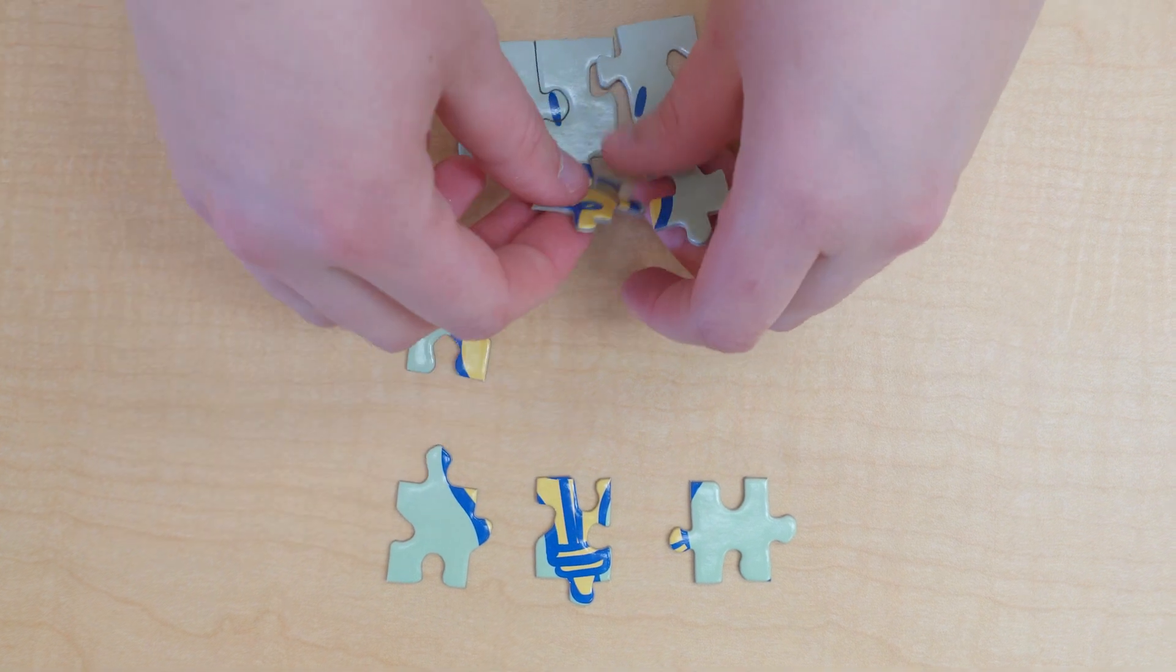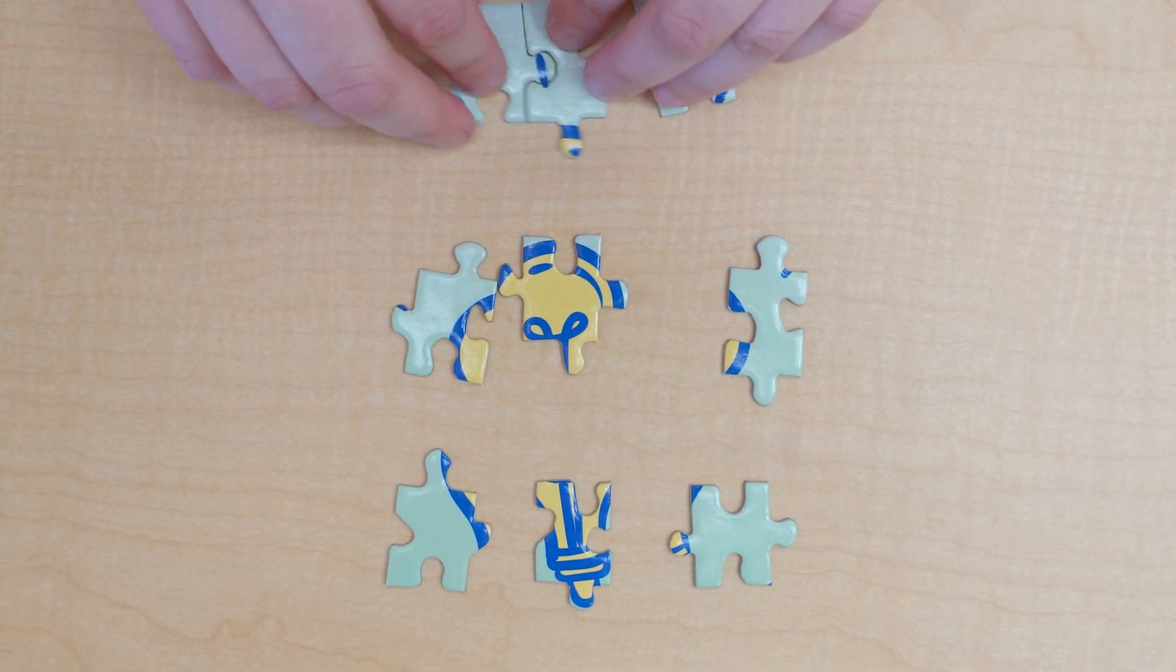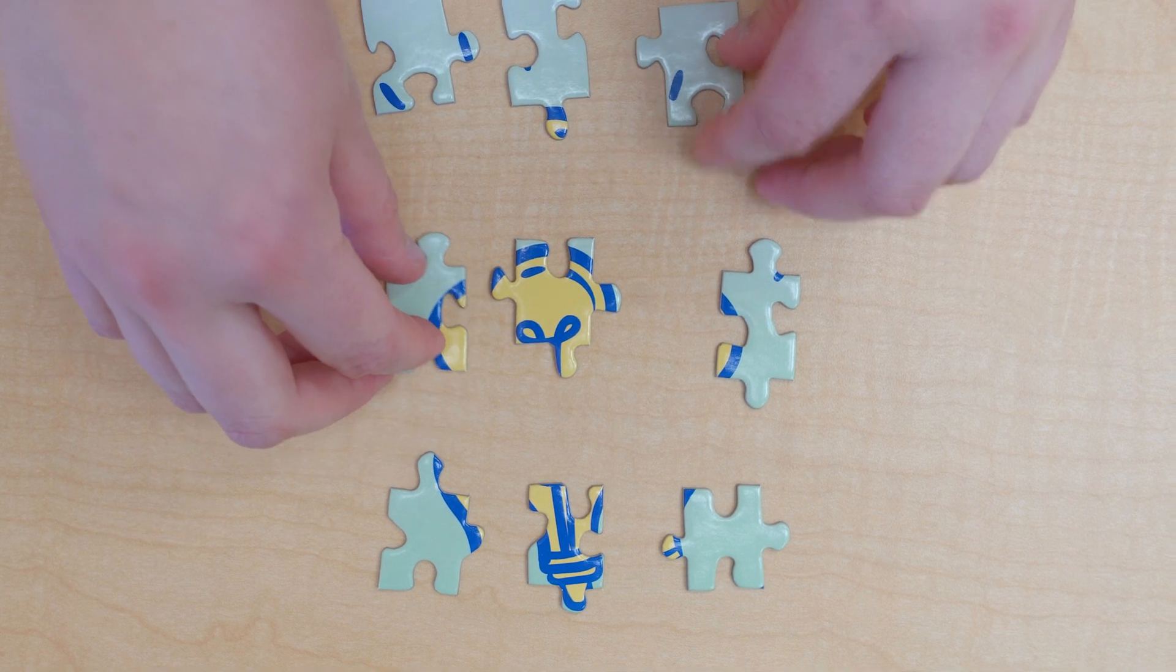As we separate the puzzle pieces, they get further apart and distort the image. There isn't enough data to fill the gaps.